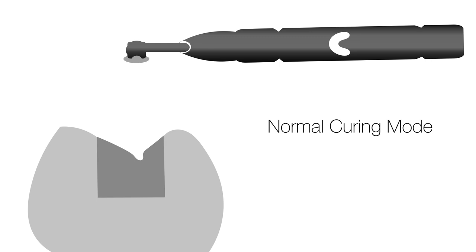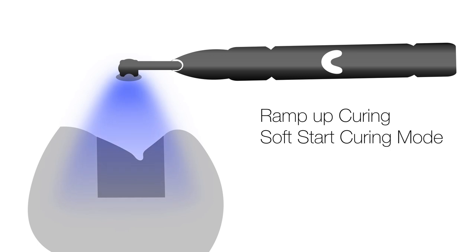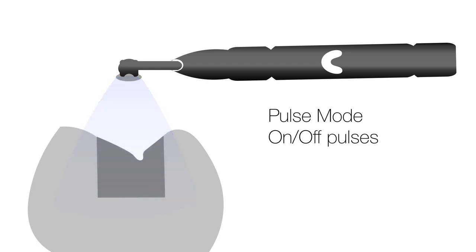The normal curing mode is set to full intensity — usually 500 milliwatts per centimeter squared for 40 seconds on a two-millimeter increment. Higher-power lights such as 1500 milliwatts per centimeter squared can rapidly cure composite but generate a lot of shrinkage stresses. To overcome this, two modes are available: ramp-up or soft-start curing, where light intensity is gradually increased over three to four seconds, and pulse mode — both minimize internal shrinkage stresses.